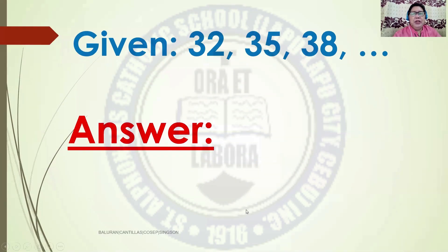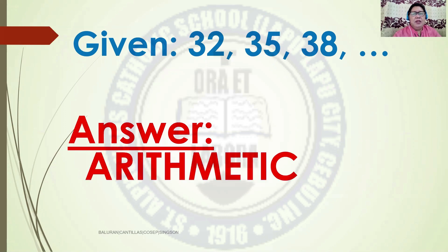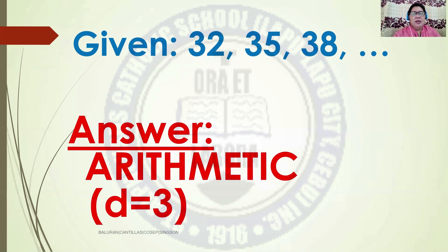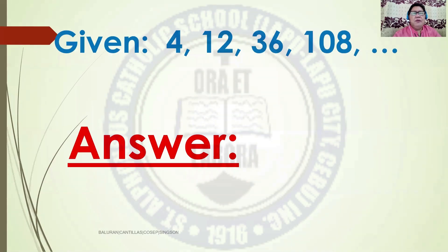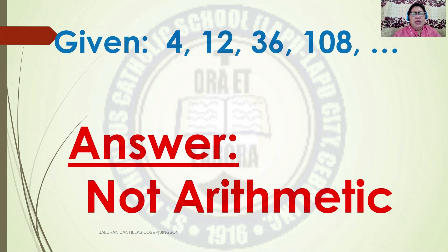Next given: 32, 35, and 38. The answer is Arithmetic Sequence because we have a Common Difference of 3. Next given: 4, 12, 36, 108. It is Not Arithmetic because we cannot find a Common Difference. 12 minus 4 is 8, and 36 minus 12 is 24, so there is no Common Difference.